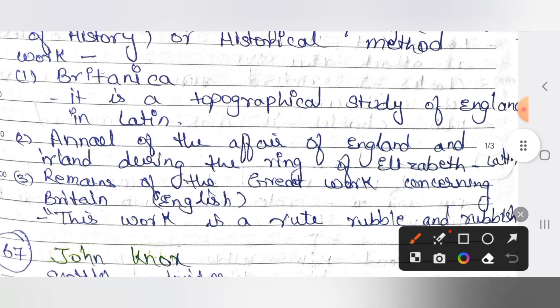The next work is the Annals of the Affairs of England and Ireland during the reign of Elizabeth, written in Latin. In this work he is supporting King James and Elizabeth. Due to this, critics criticized him — he supported the Elizabethan and King James era and called it a golden age.